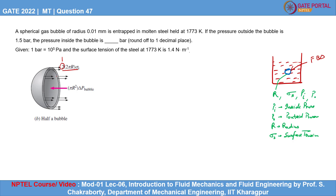The surface tension will act along the circumference, which is 2πr, multiplied by the surface tension sigma. That is the force acting circumferentially. The pressure acts on the area, which is πr². The net pressure is the difference of inside and outside pressure. Unless these two forces balance, the bubble won't be stable — if the pressure difference is too high, the bubble expands, and if surface tension doesn't support the expansion, the bubble collapses.